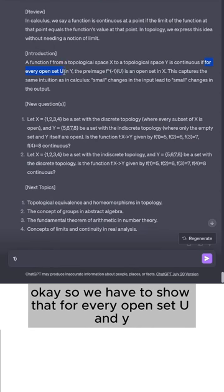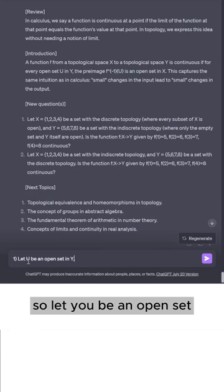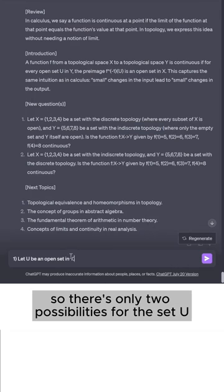Okay, so we have to show that for every open set u in y, the pre-image is an open set in x. So let u be an open set in y. Now y has the indiscrete topology where only the empty set and y itself are open. So there's only two possibilities for the set u.